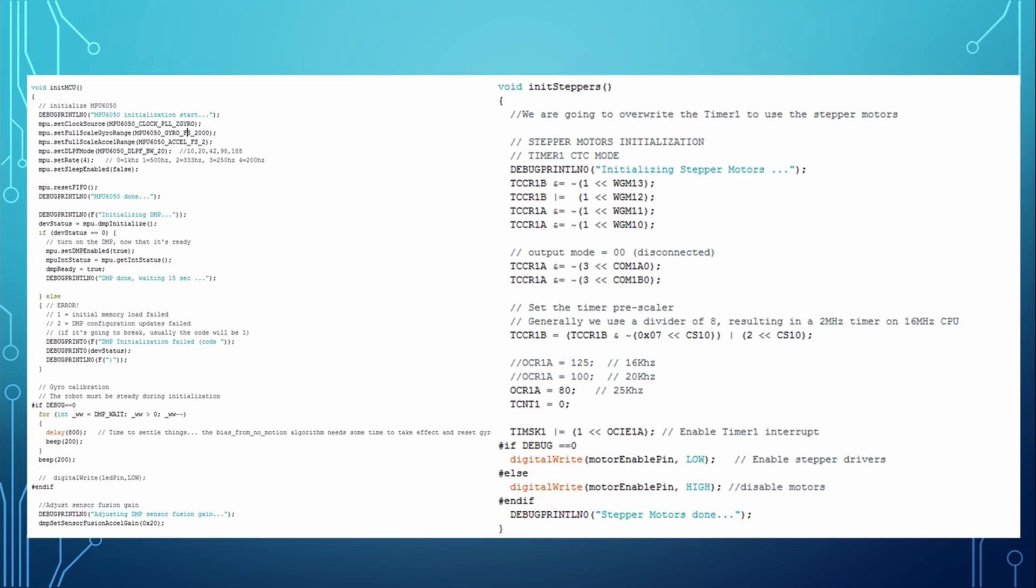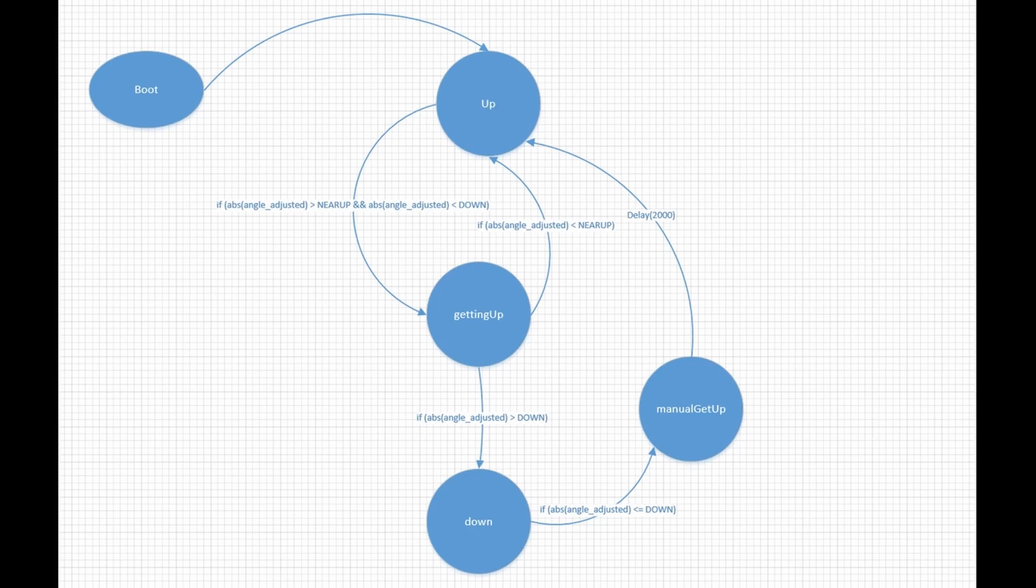Let's now turn towards the software. It consists of the initialization routines and the interfaces for all sensors. The main loop, as usual, is programmed as a state machine with four states. The states are obviously up and down and two states in between.